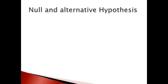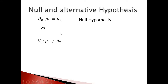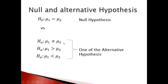For the null and alternative hypotheses: the null hypothesis H₀ is always μ₁ equal to μ₂. The alternative hypothesis can be μ₁ ≠ μ₂, μ₁ > μ₂, or μ₁ < μ₂ — we choose based on the question.